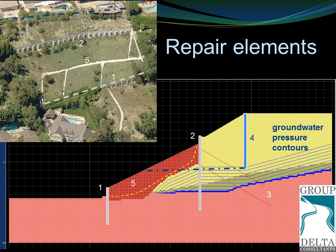The repair involved: (1) a line of soldier piles at the toe of the slope; (2) a line of stabilizing piles in the middle of the slope, which had (3) two lines of tiebacks; (4) a drainage curtain to ensure the canyon would be drained — with ground pressure contours assumed in the design using FLAC; and (5) the removal of the landslide and construction of a compacted fill buttress between the two lines of stabilizing piles.